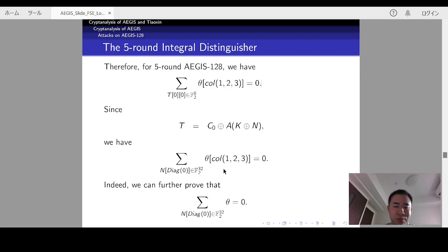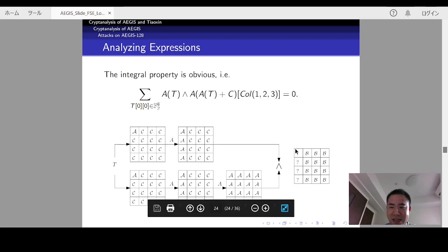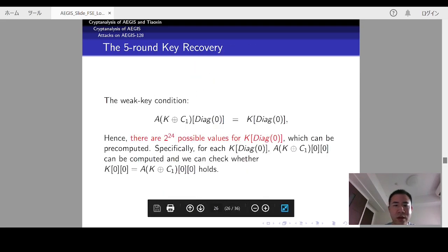Indeed, we can further prove that in this case, the whole state of theta is balanced. This is mainly because here, we can prove that in this case these four bytes are also balanced.